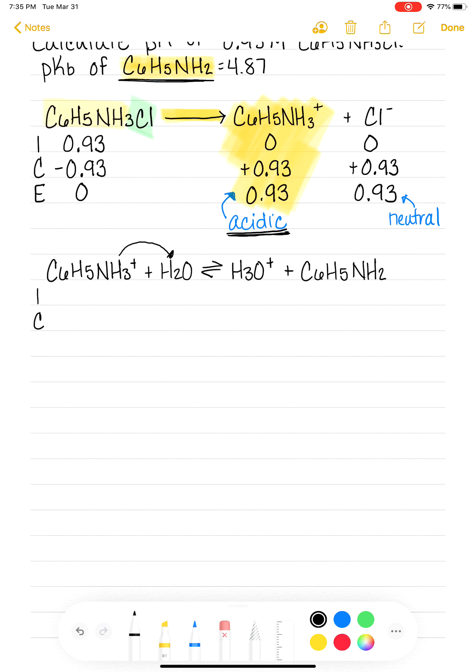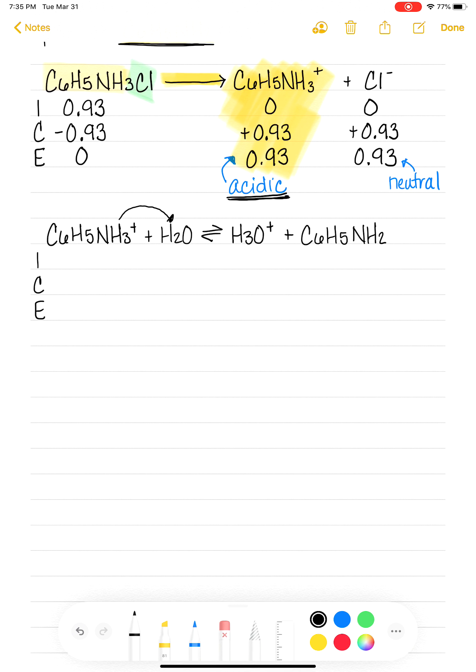We need to make an ice table for this guy right here. Using the information from the first ice table that we made, we have 0.93 of the C6H5NH3+. We don't care about water. We had no H3O+, and we also had no C6H5NH2 in that ice table. So those are zeros. This is an equilibrium reaction, which means we don't know how much we're going to react. Minus X, plus X, plus X. At equilibrium, 0.93 minus X. But you guys know, we're going to assume X is small, and we're going to call that 0.93.